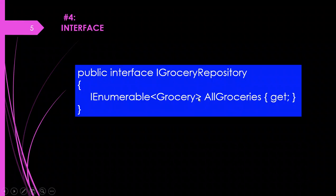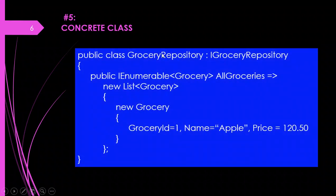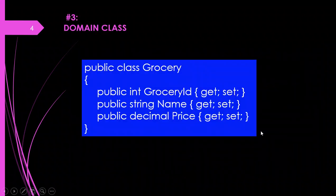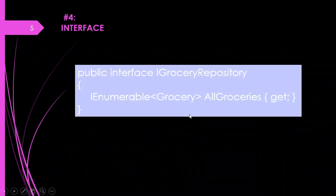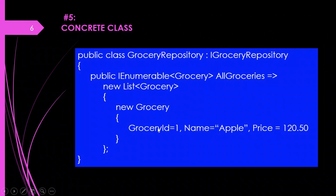This method should be implemented by a class — that is the concrete class. GroceryRepository is a concrete class which implements IGroceryRepository. The method specified in the interface must be implemented here. The AllGroceries method here returns an IEnumerable of Grocery. We are creating a Grocery object by providing values for GroceryID, Name, and Price — the properties defined in the domain class — and we initialize the values for each of these properties inside the concrete class implementation.